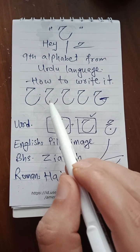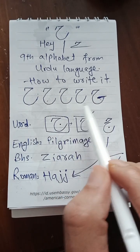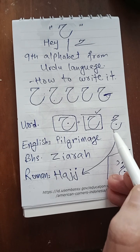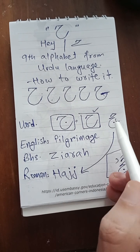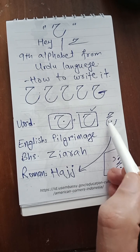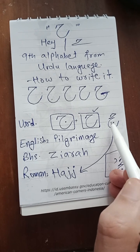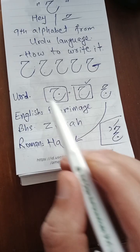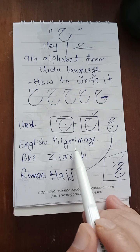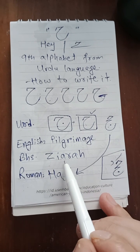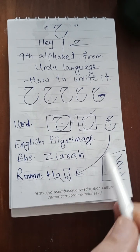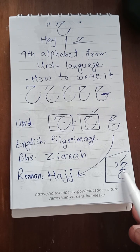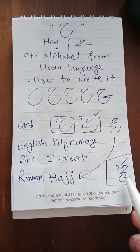In Arabic we call it 'ha', but in Urdu we call it 'he', and we write it like this. From 'he', the example word is 'haj' — in Urdu, haj. In English we call it pilgrimage. In Bahasa we call it zayara. In Roman script we write it h-a-j-j. So when we attach 'he' and 'jim' together it becomes 'haj'.